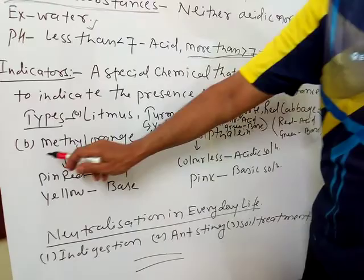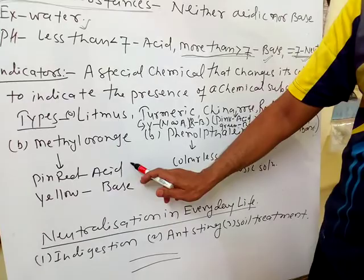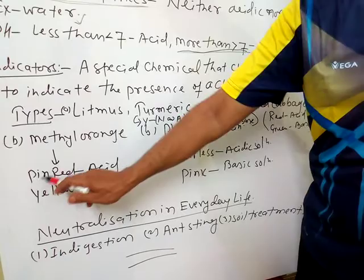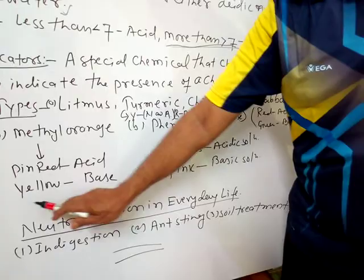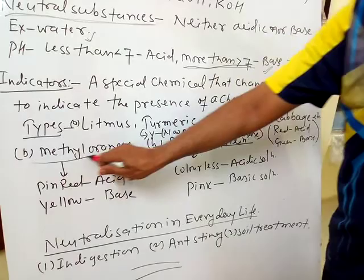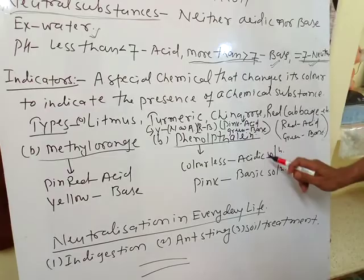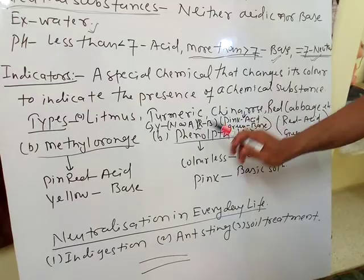The first chemical indicator is methyl orange. Methyl orange turns pink-red in acidic solution. When we put methyl orange in acid, it turns pink-red. And when we put methyl orange in a base, it turns yellow.